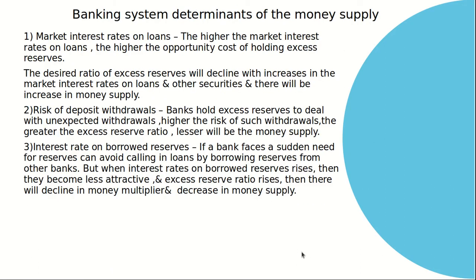Banking system determinants of money supply. First is market interest rates on loans. Higher market interest rates on loans means a higher opportunity cost of holding excess reserves, because on reserves we are not getting any interest rate. So the desired ratio of excess reserves will decline with an increase in interest rates on loans. When market interest rates on loans rise, the desired ratio of excess reserves declines and there is an increase in money supply. There is an inverse relationship between excess reserve ratio and money supply.